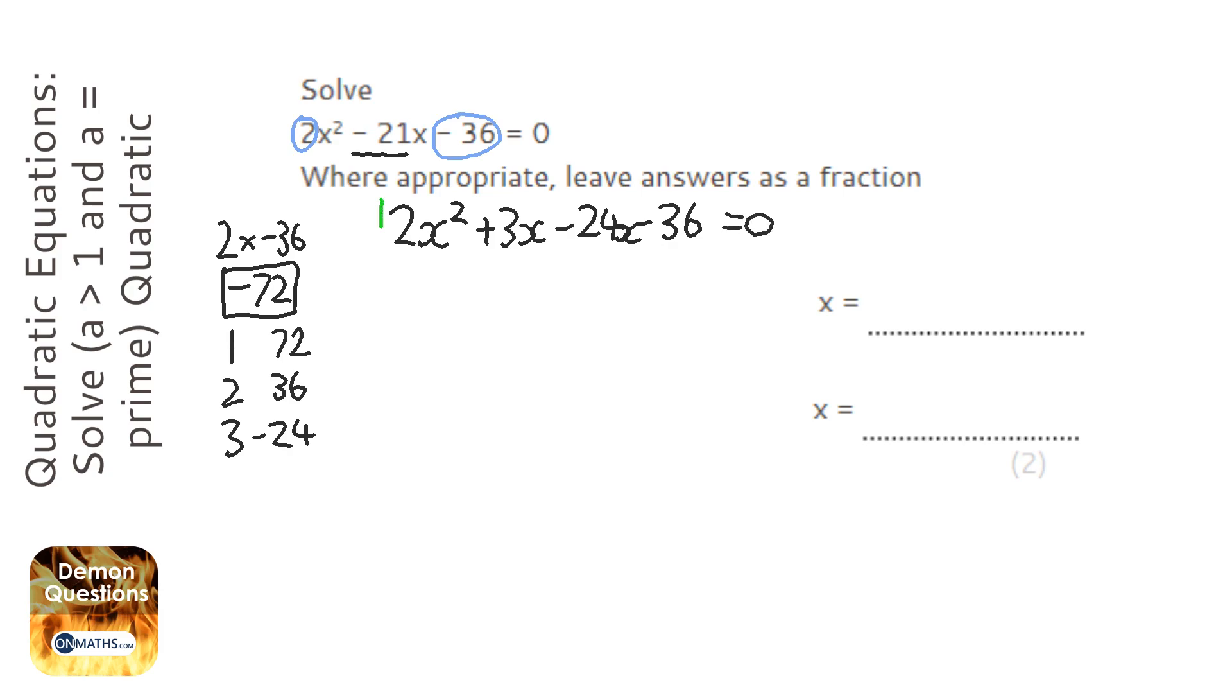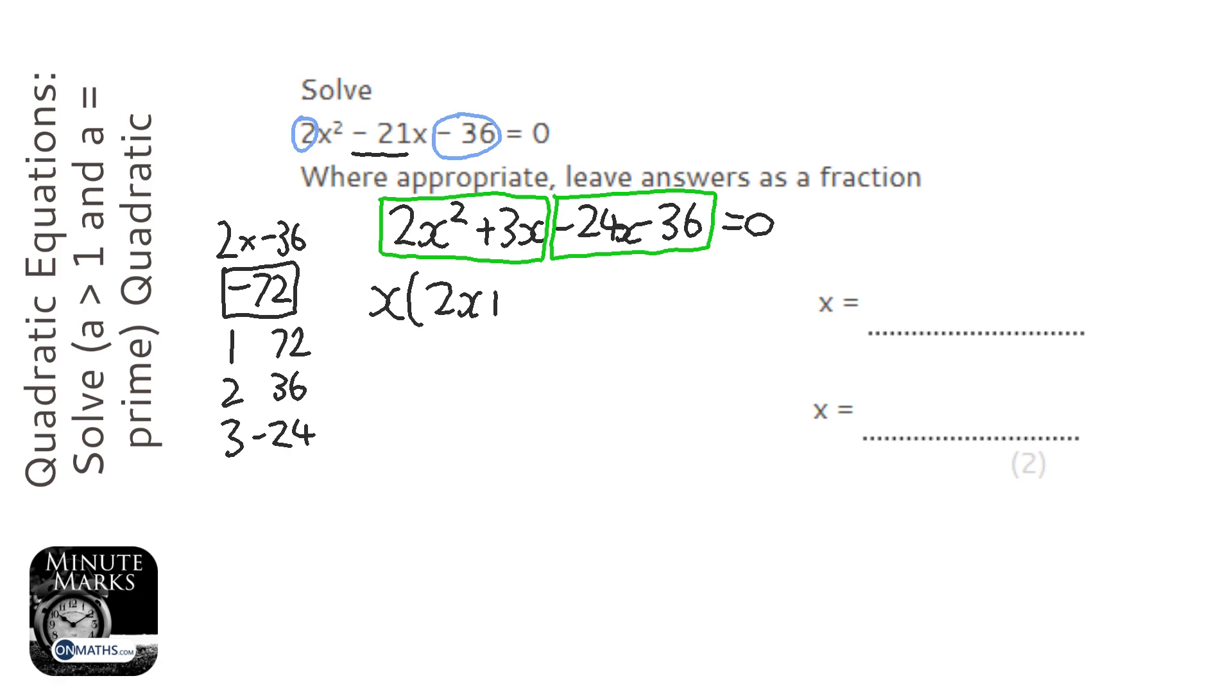Now to do this next step, we need to just look at these first two terms, and then we're going to look at the second two terms. And we're going to factorise them linearly. So looking at those two, I can divide out an x, there's nothing else, and so we're left with 2x plus 3.